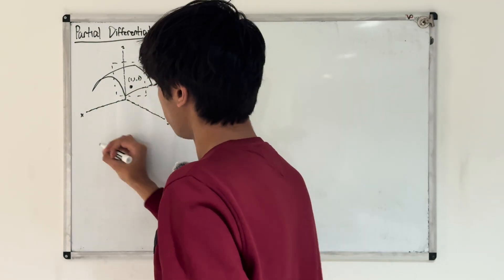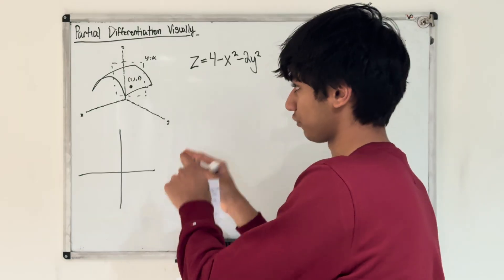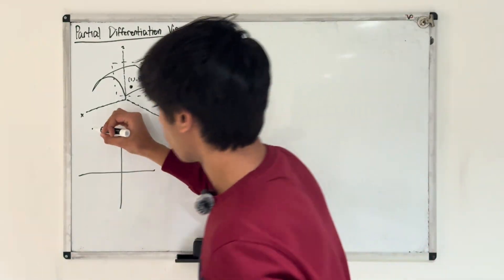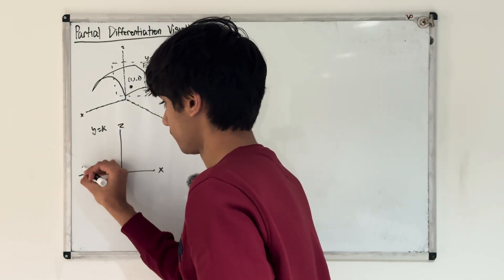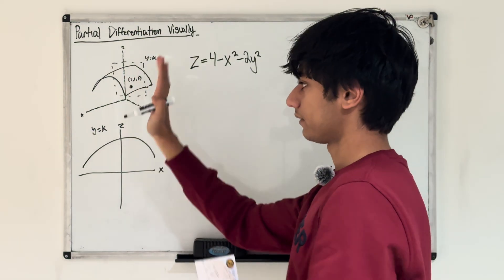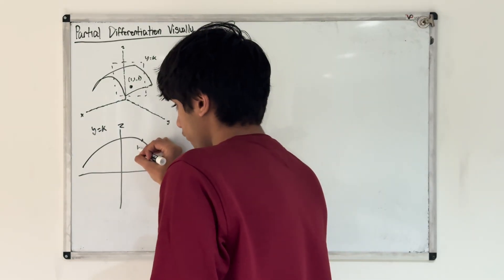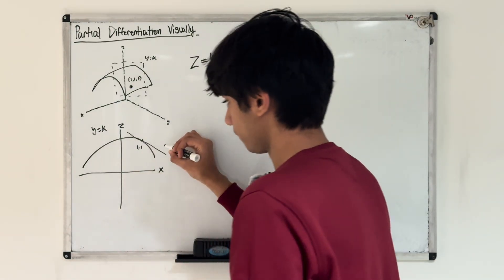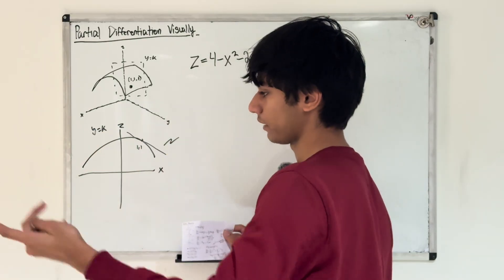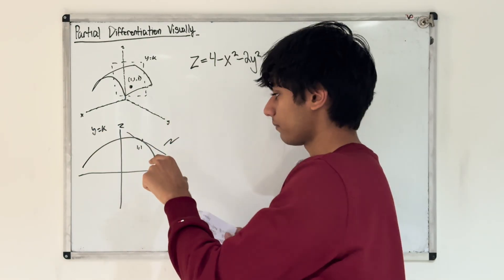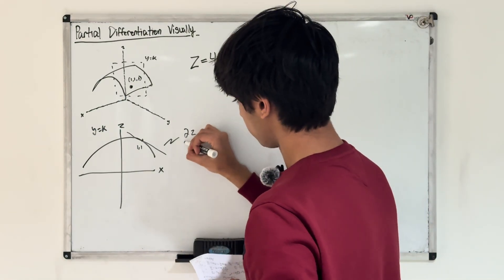So y equals k is our plane, and if we consider what this looks like in 2D — because we know how to take derivatives in 2D — that's the idea with partial differentiation: we consider one variable to be constant, like y equals k, and then we can consider this in a 2D space. In 2D it looks something like that if we take a cross section parallel to xz, with y equals k. At the point (1,1), our slope is going to be negative. This is called the partial derivative, because we're setting the input we don't care about to be constant and then finding the derivative from that. The notation is ∂z/∂x.